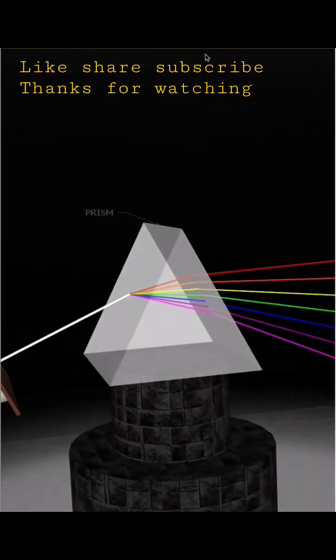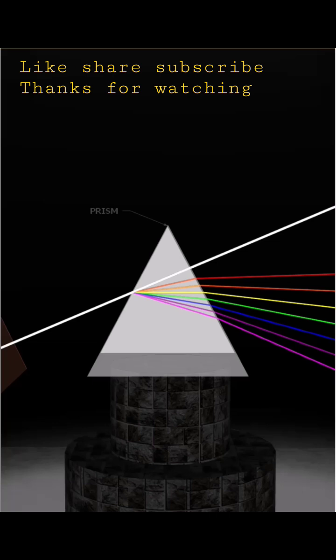The total angle each color makes with the original direction of light is called angle of deviation.